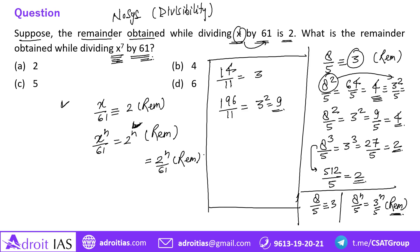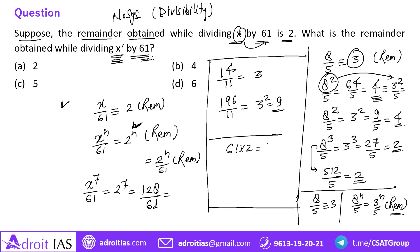So x to the power 7 divided by 61 gives 2 to the power 7 as a remainder. 2⁷ = 128, and 128 is further divisible by 61. Since 61 × 2 = 122, we get 128 − 122 = 6 as the remainder. So the final remainder of this question is 6.